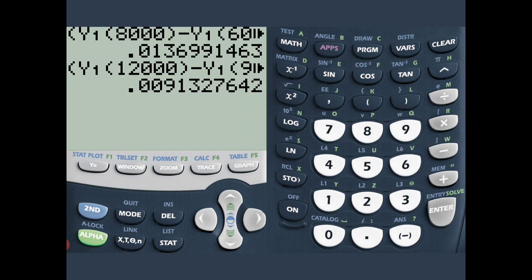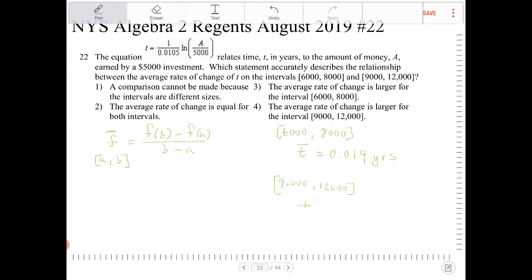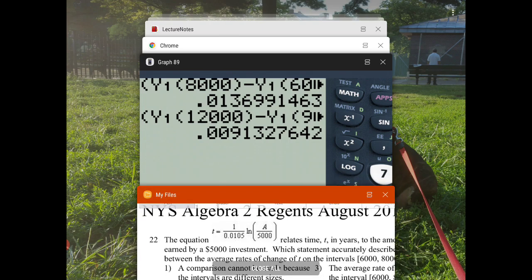So I get 0.0091. So T-bar here is 0.0091.